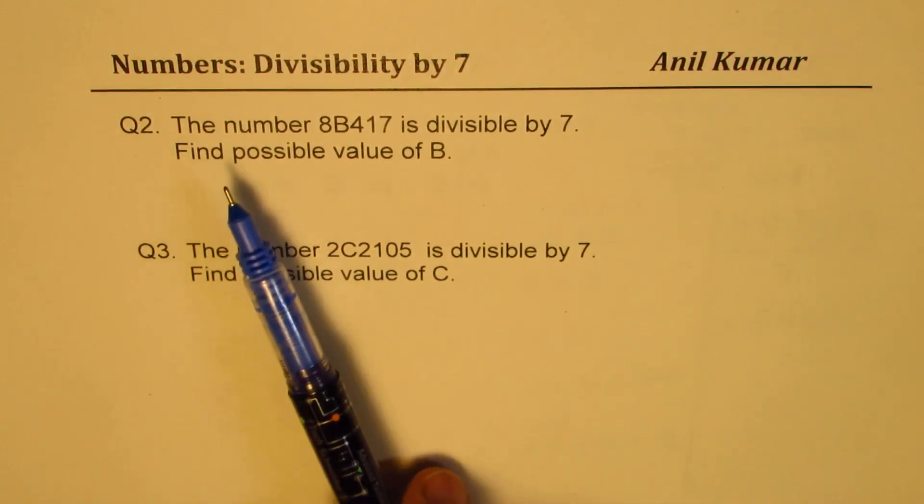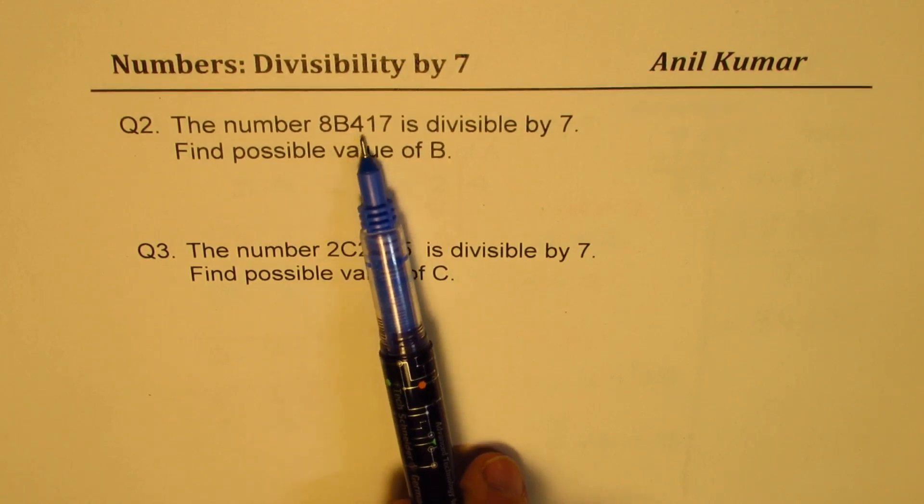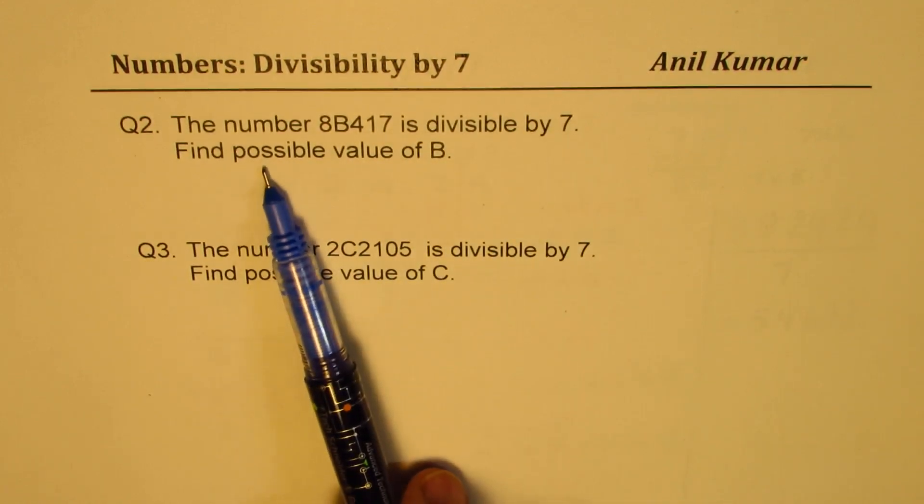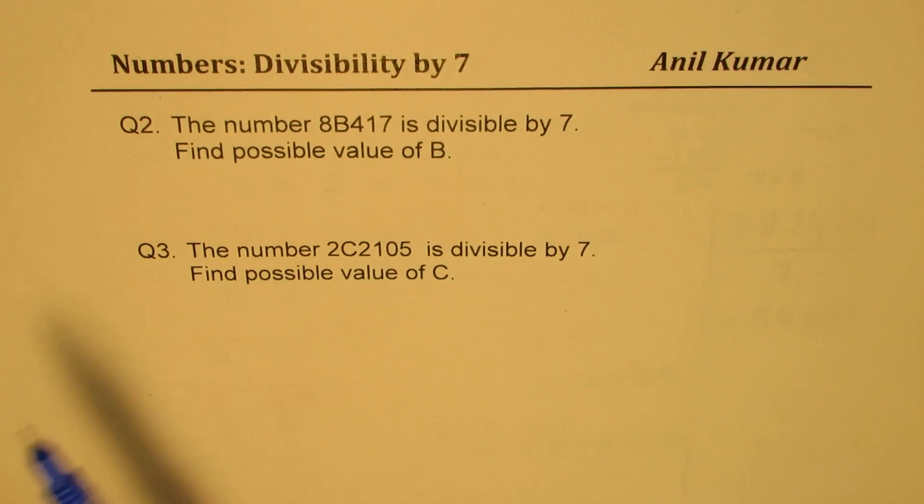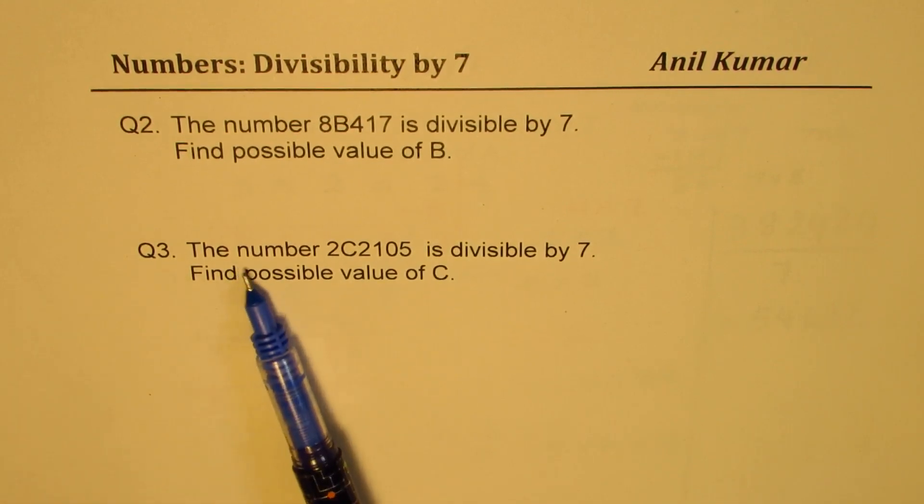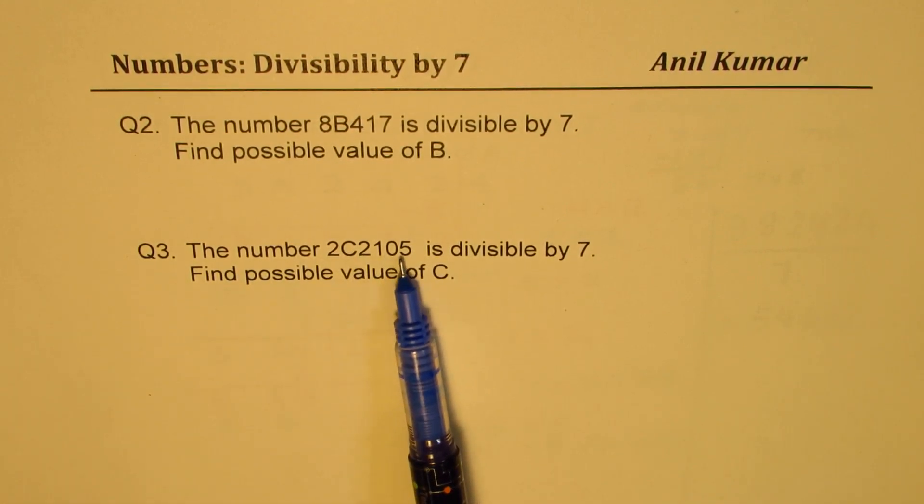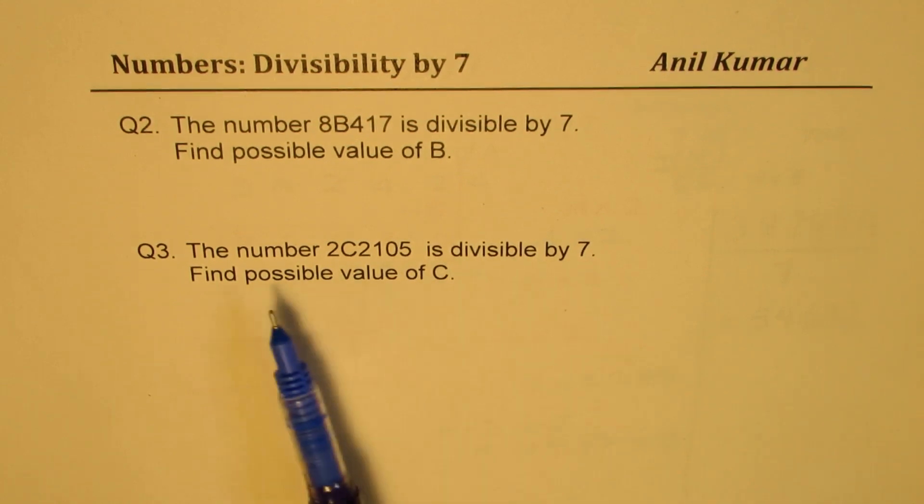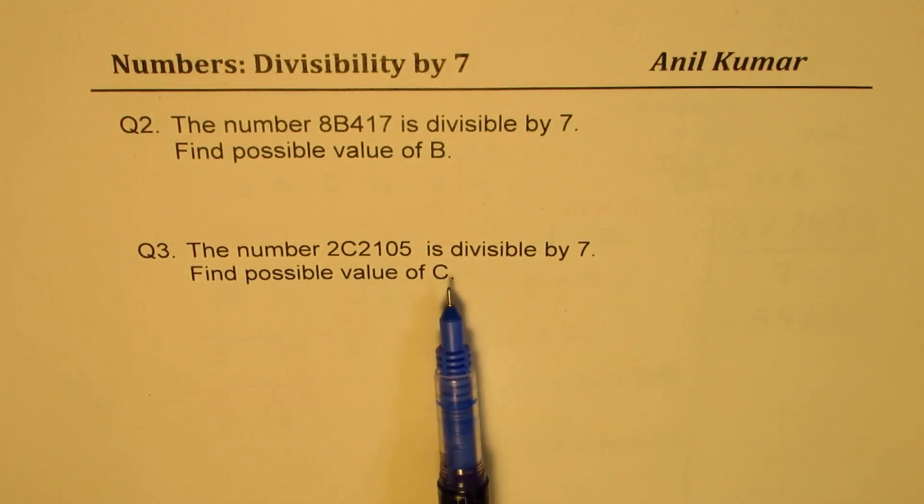Question number 2. The number 8B417 is divisible by 7. Find possible value of B. Question 3. The number 2C2105 is divisible by 7. Find possible value of C.